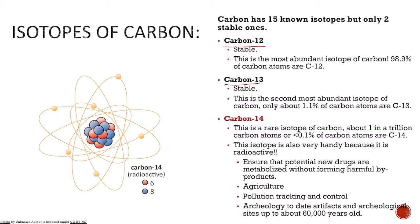Carbon-13 makes up about 1% of carbon in nature. Carbon-14 is really a rare form of carbon, making up less than 0.1%, about one in a trillion carbon atoms. This isotope is radioactive and can be used in biomedical research to ensure new drugs are metabolized without forming harmful byproducts. It can be used in agriculture, for tracking and controlling pollution, and in archaeology to date artifacts and archaeological sites up to about 60,000 years old.